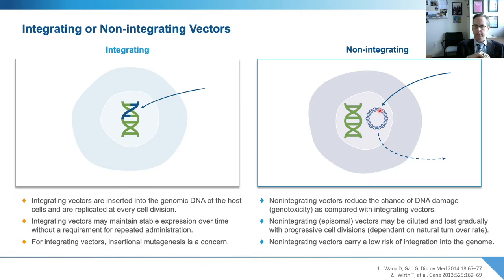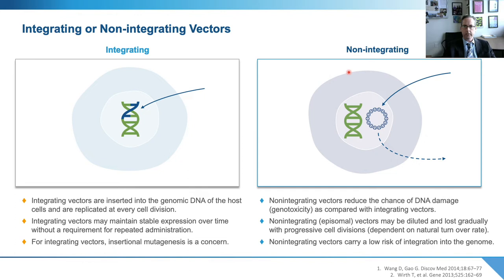The potential advantage of an integrating vector, if it can be manipulated appropriately, is that you'd have a copy of your corrected genetic sequence within every cell and that it would be retained upon dividing. At the moment, the current state-of-the-art for gene therapy in general is to stick with non-integrating vectors. The idea here is that you'd be giving a large dose of viral vector — let's say AAV — and that the dose of DNA getting into the nucleus would be sufficient for the DNA to associate and form stable DNA structures that would be able to stick around in the nucleus for a long period of time. These would not necessarily be transferred over to future generations of dividing cells, but at the same time they wouldn't be causing any additional genetic toxicity as they wouldn't actually be directly interacting with the patient's DNA.